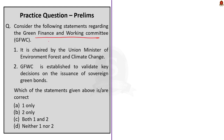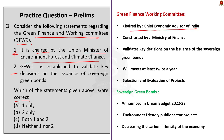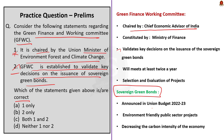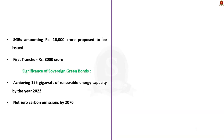The next question is about the Green Finance Working Committee (GFWC). Two statements are given. First statement says GFWC is chaired by the Union Minister of Environment, Forest and Climate Change — this is wrong. It is chaired by the Chief Economic Advisor of India, not the Minister of Environment. Second statement says GFWC is established to validate key decisions on the issuance of sovereign green bonds — this is correct. The issuance of sovereign green bonds was announced in Union Budget 2022-23. Proceeds will be used in environment-friendly public sector projects to decrease carbon intensity of the economy. Sovereign green bonds amounting to ₹16,000 crore are proposed for mobilizing resources for green infrastructure projects.